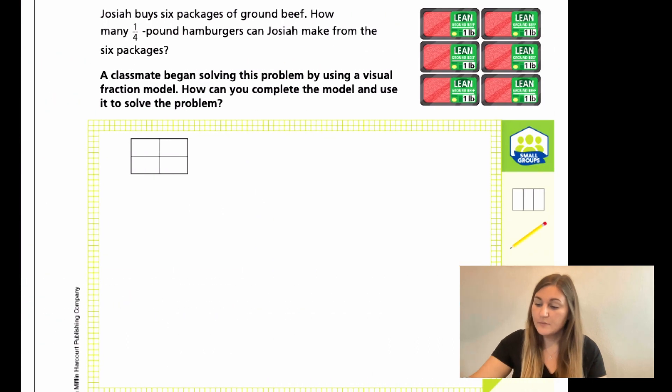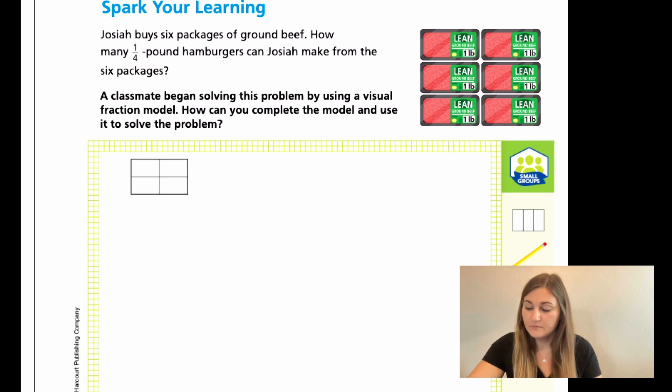So if we move into Lesson 1 on page 267, we have a Spark Your Learning and it reads, Josiah buys six packages of ground beef. How many one-fourth pound hamburgers can Josiah make from the six packages? A classmate began solving this problem by using a visual fraction model. How can you complete the model and use it to solve the problem?